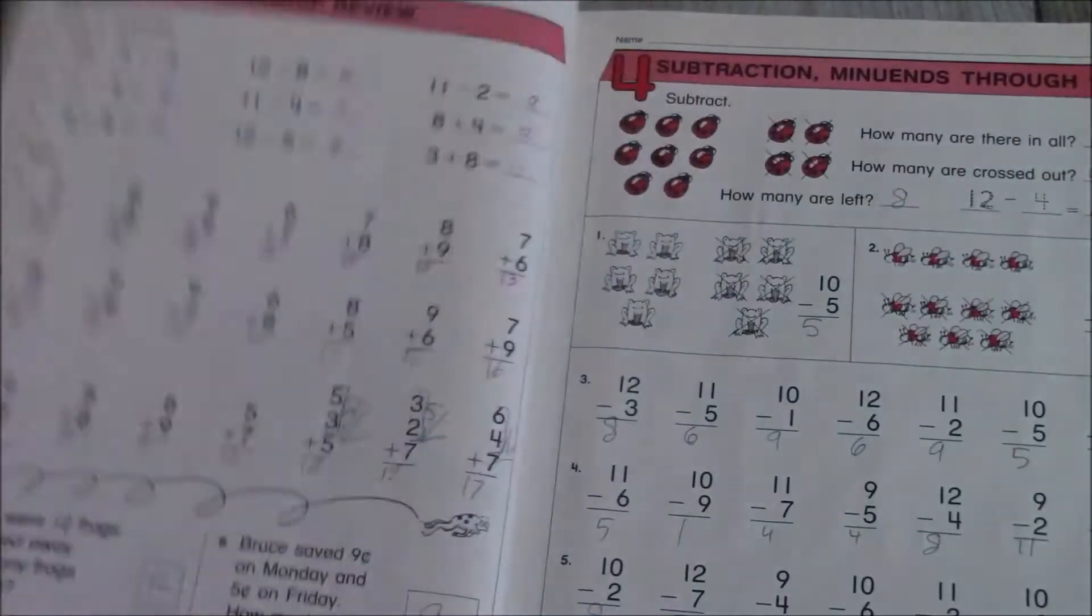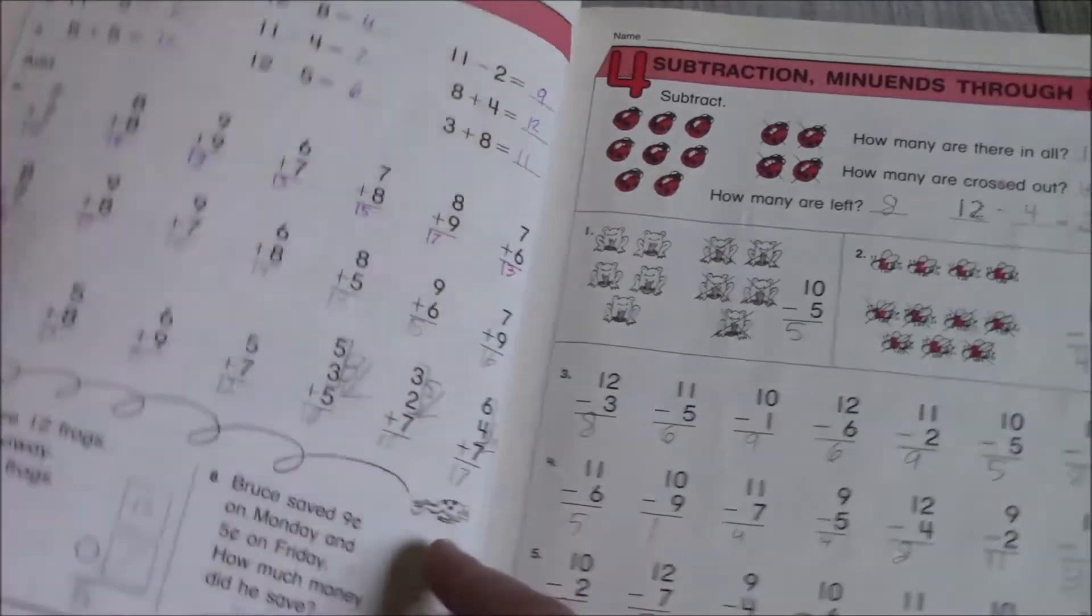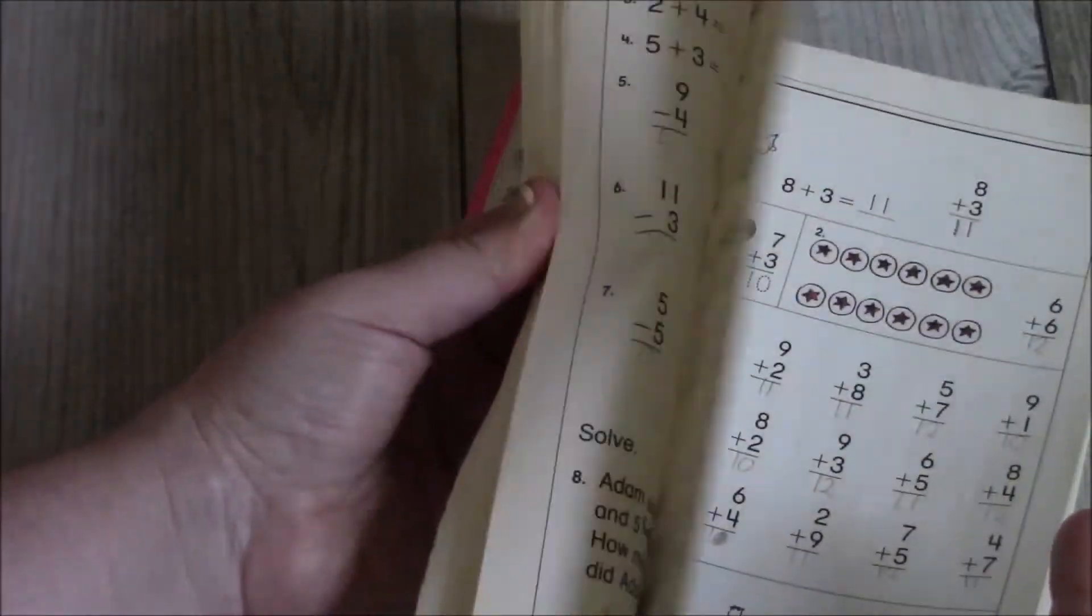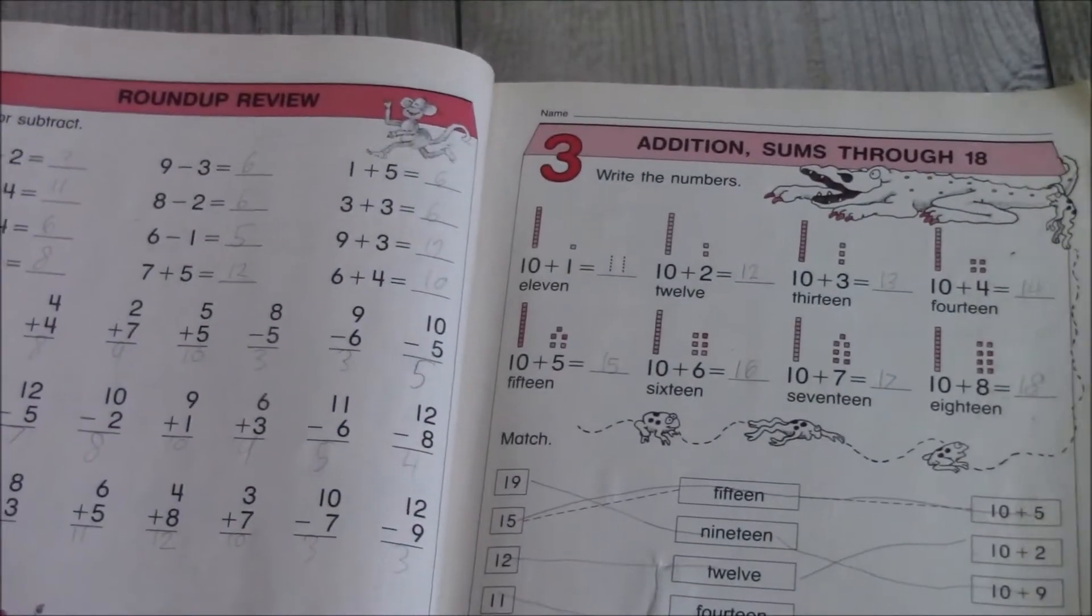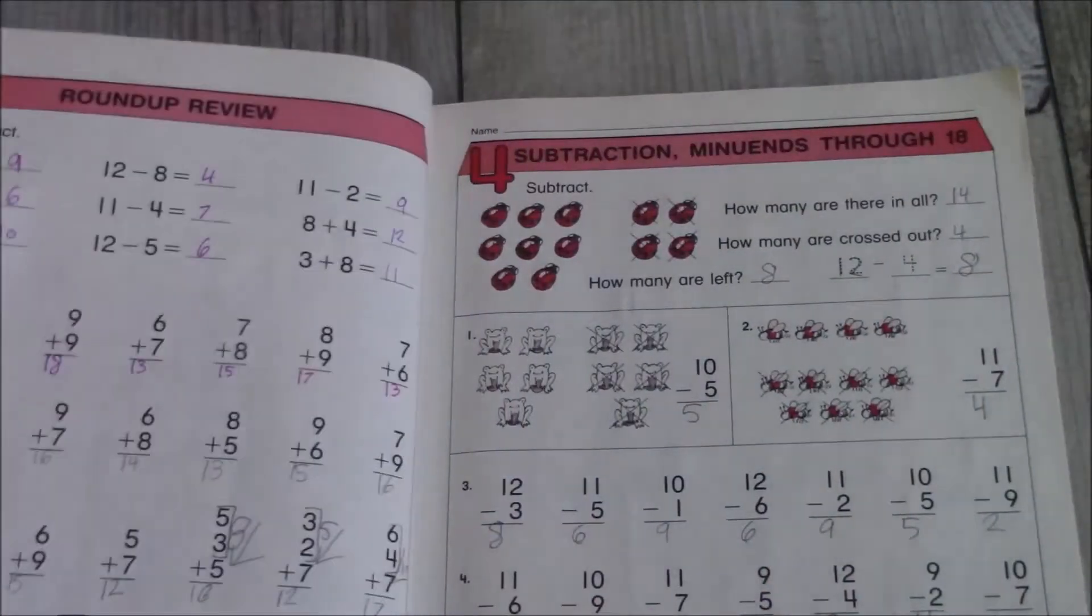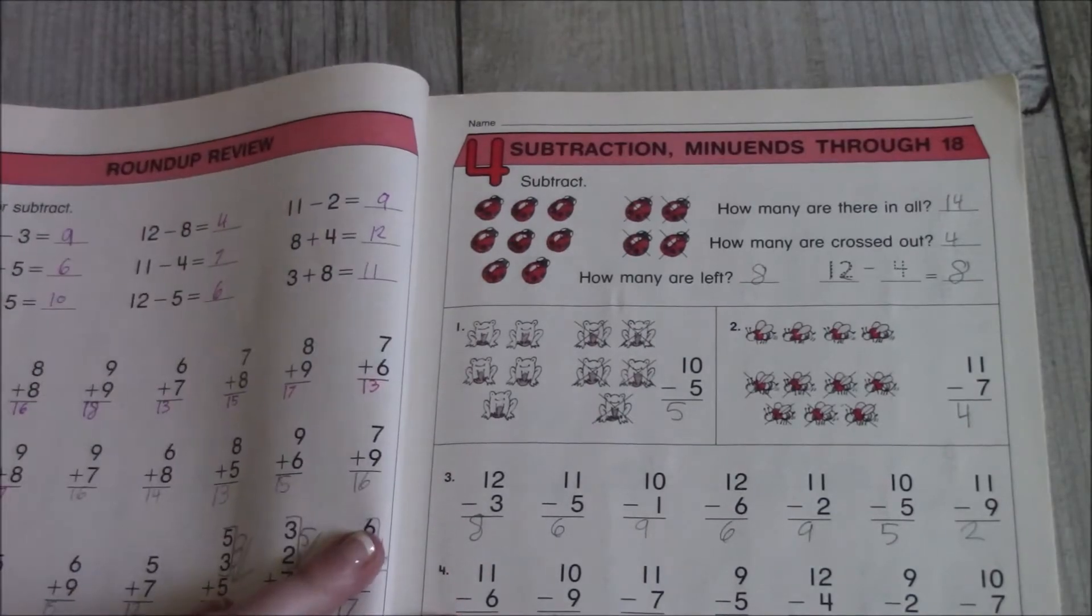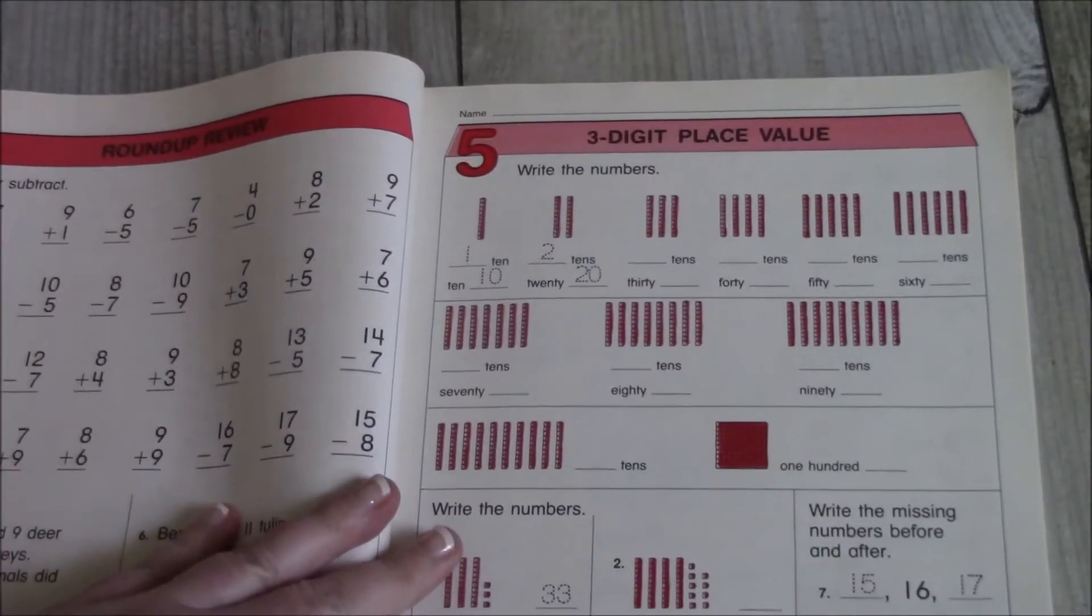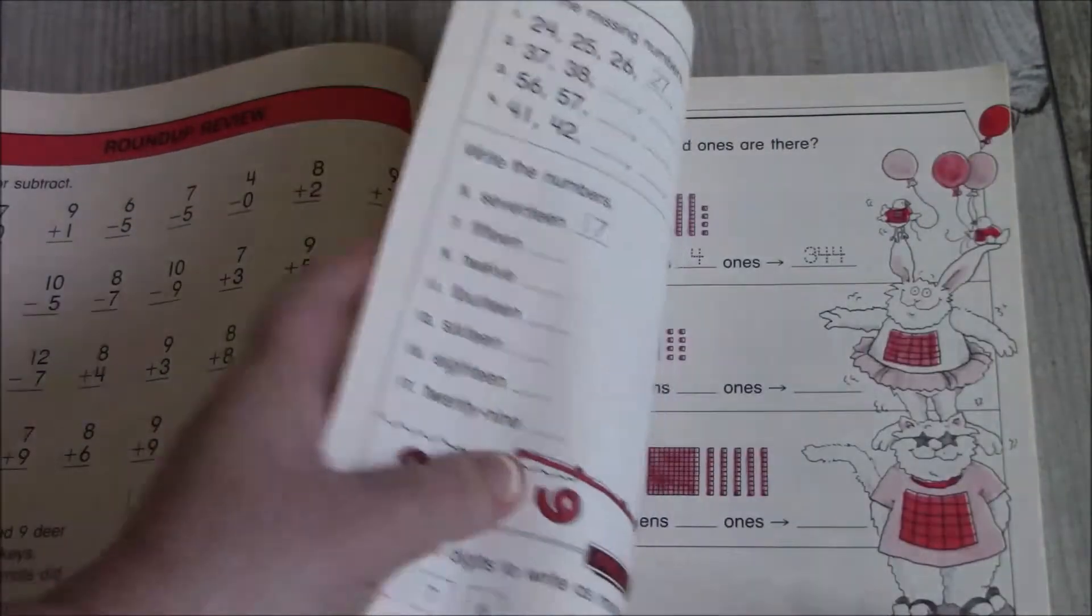We have a chapter checkup. So that means I missed a chapter here. We missed chapter three. What is chapter three going to teach us? Addition, sums through 18. Chapter four is subtraction and minuends through 18. Chapter five is three-digit place value.